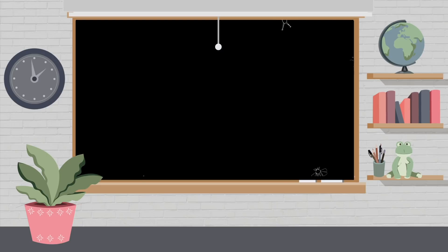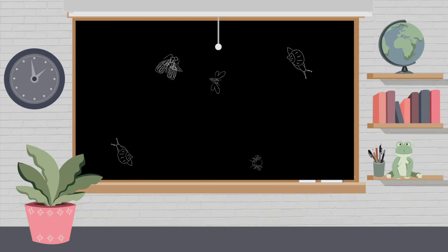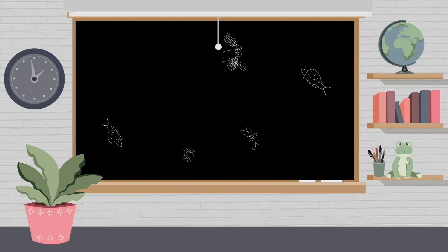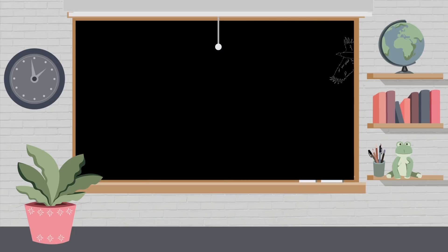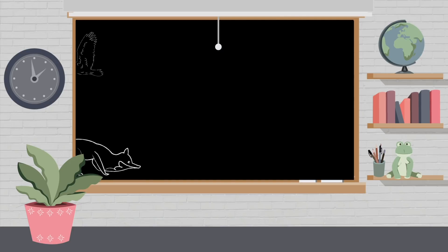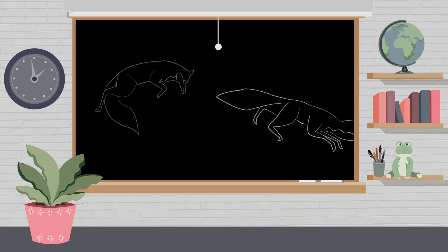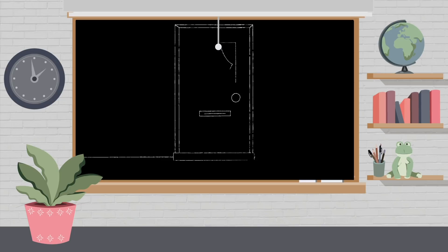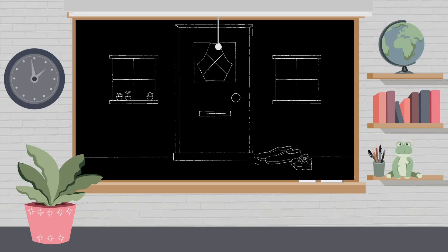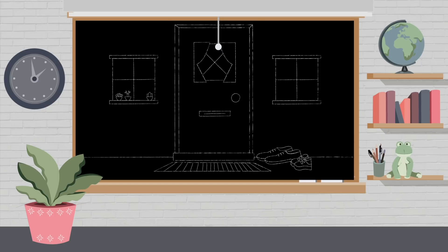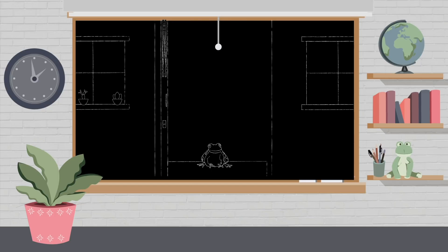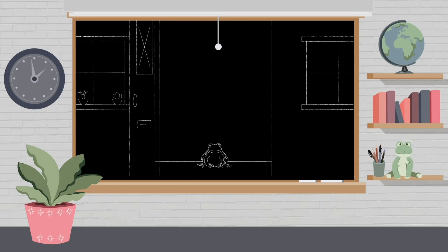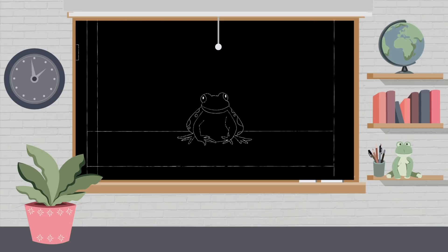Frogs and newts keep the insect and slug populations in check and themselves serve as prey for foxes and birds. Amphibians are often a child's first introduction to the natural world. We have a connection with them as they live in such close proximity to our homes.